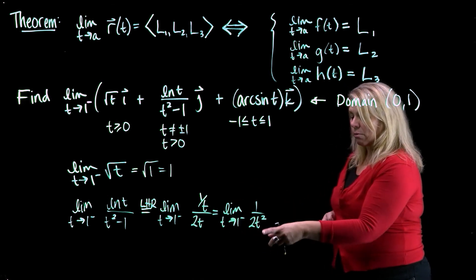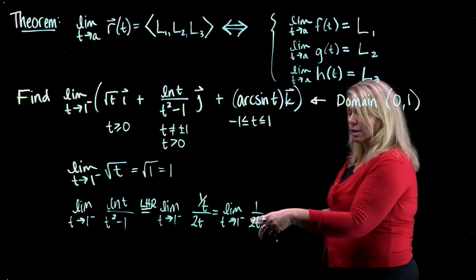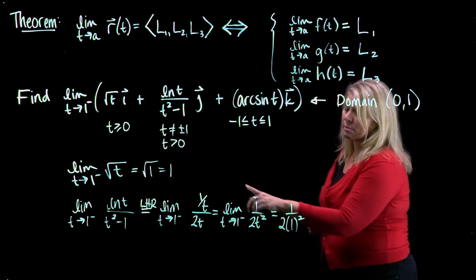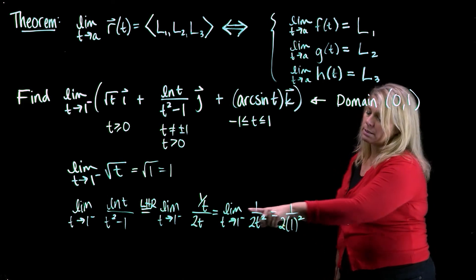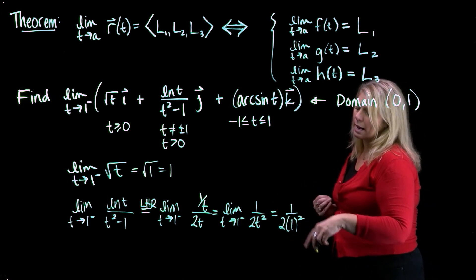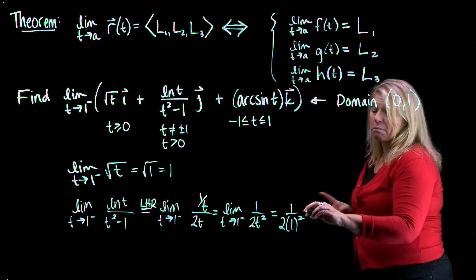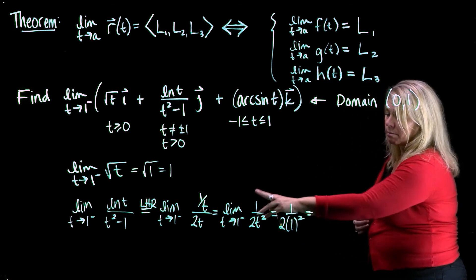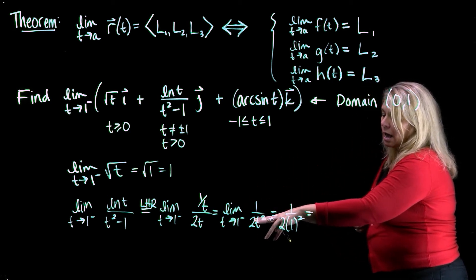And then this is a limit where I can just use substitution to finish this limit. So this would be 1 over 2 times 1 squared. Remember that limits are not really about substitution, but sometimes you can do that as a shortcut if your function meets the criteria for the theorems. All right, so we get 1 half.